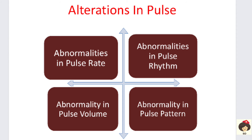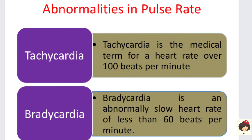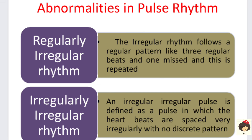Abnormalities in pulse rate: tachycardia is when the pulse rate is more than 100 beats per minute — that is an increased heart rate. Bradycardia is when the heart rate is less than 60 beats per minute — that is a decreased or slow heart rate.